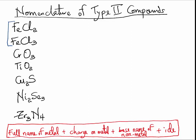So how do we name them? The idea behind naming them is to look at the format for naming Type 2 compounds. We will write the full name of the metal, then we will calculate the charge on the metal and place it in parentheses written in Roman numerals. And then we will write the base name of the non-metal and end the name with -IDE.